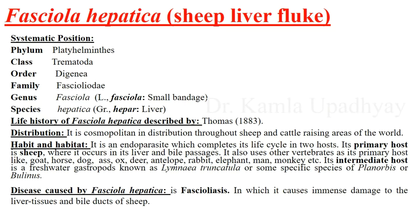They are placed in Platyhelminthes because of their acoelomate, triploblastic, bilaterally symmetrical, and vermiform body which is dorso-ventrally flattened and which does not have any kind of skeleton. Their class is Trematoda — they are included because they are ecto- and endoparasites, and mostly flatworms commonly called flukes.